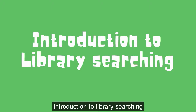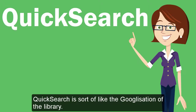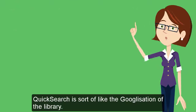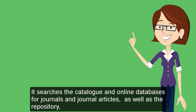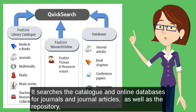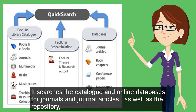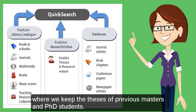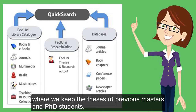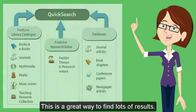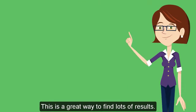Quick Search is sort of like the Googlization of the library. It searches the catalogue and online databases for journals and journal articles, as well as the repository where we keep the theses of previous Masters and PhD students. This is a great way to find lots of results.